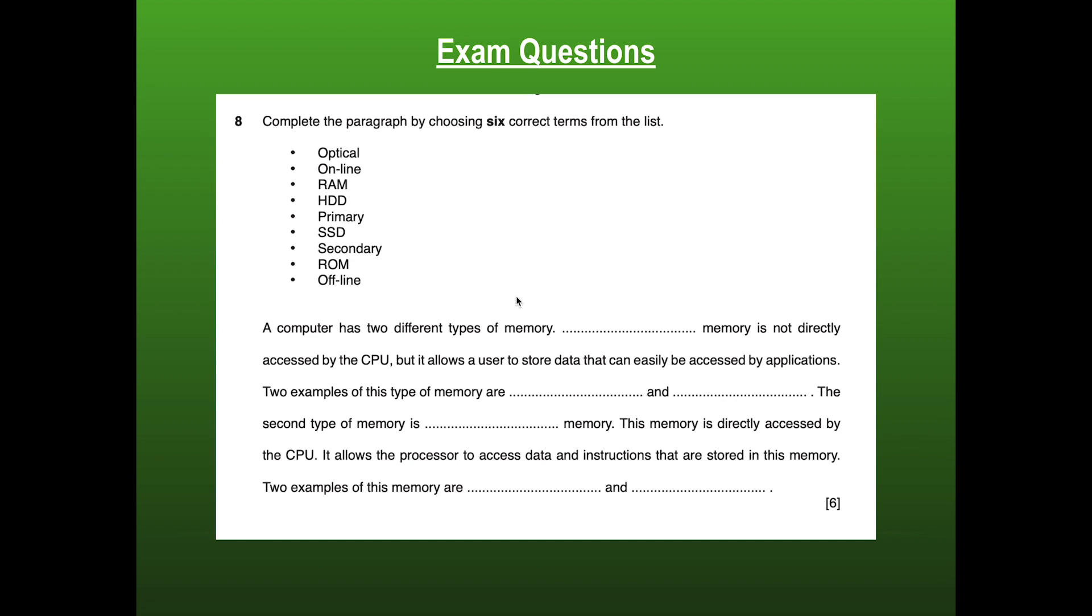So now we're down to only seven terms, which is going to make this a lot easier. So our two main types of memory would be primary and secondary. So let's read this first sentence. Something memory is not directly accessed by the CPU, but it allows users to store data that can easily be accessed by applications. So which one is not directly accessed? Well, that is secondary because only primary memory is directly accessed by the CPU. Secondary memory does not access the CPU. And we also know that it does store the data, such as files and applications. So our first answer is secondary.